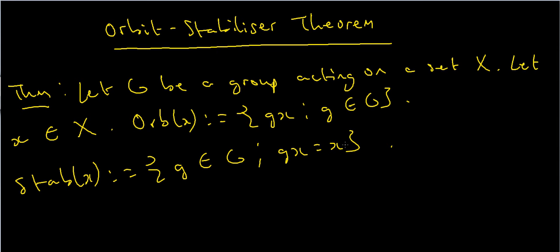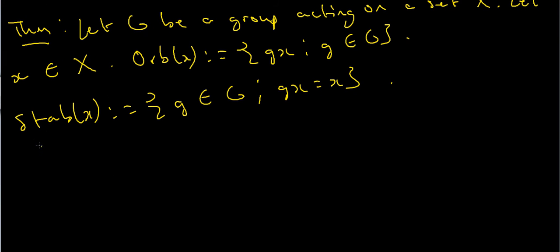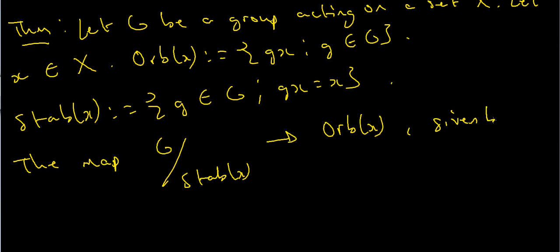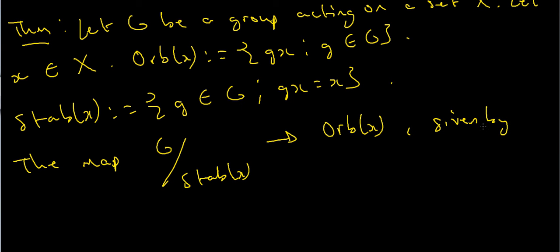So now I'm going to define a map from G mod Stab X to the Orbit of X, which is given by: I'm going to define this map as follows. So it's going to be G Stab X, which maps to GX.